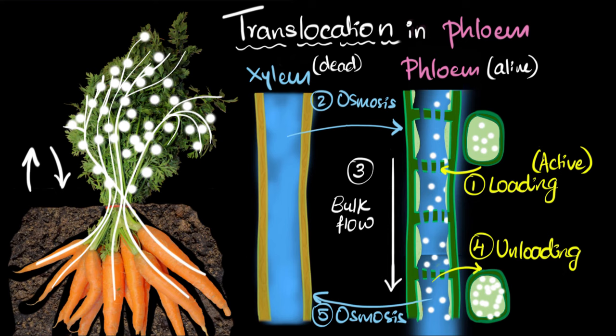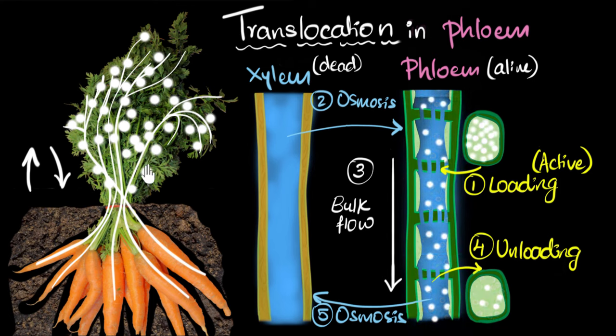Alright, that's pretty much it. So let's quickly summarize. What did we learn in this video? We saw that plants and trees can move the food up or down based on their requirement. And we call this translocation. And this happens inside the phloem tissues. In the first step, we have loading where the sugars get loaded actively into the phloem tubes. And this requires energy. That's why it's called as an active process. And that's why these cells need to stay alive.